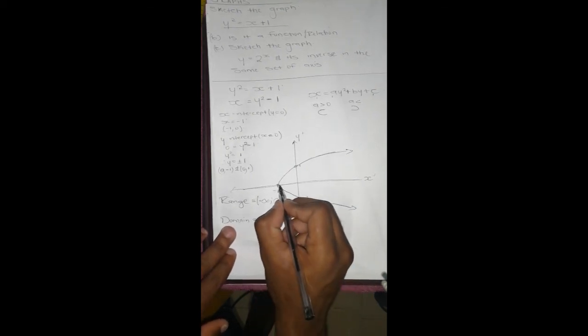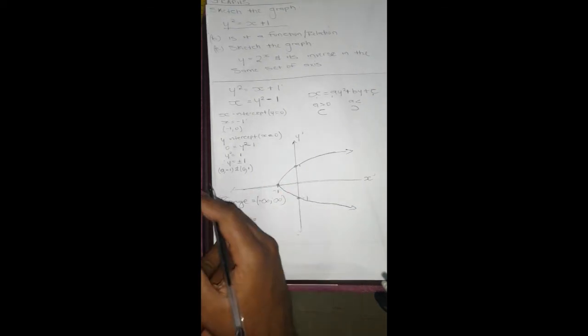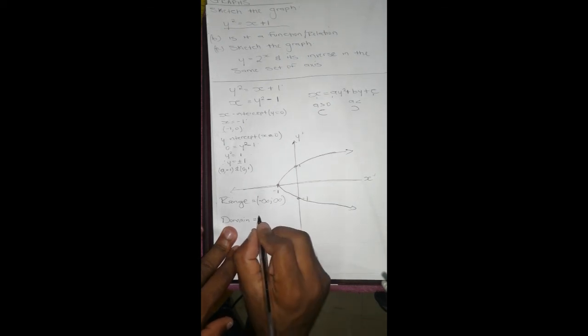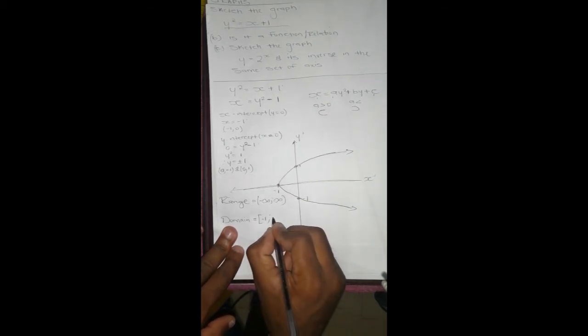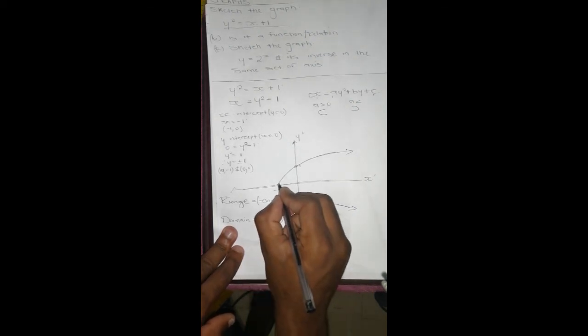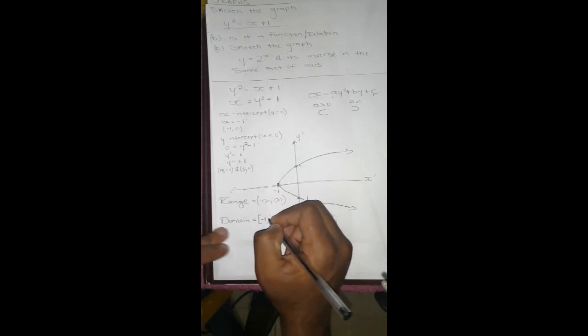For the domain, if you check, it starts from negative 1 and it just keeps on going. So it's going to be negative 1 to positive infinity, and we include negative 1 because the graph exists at negative 1.